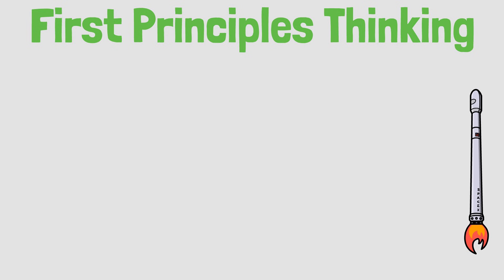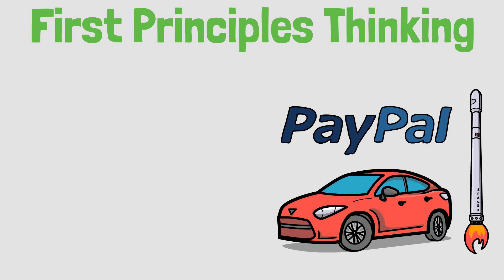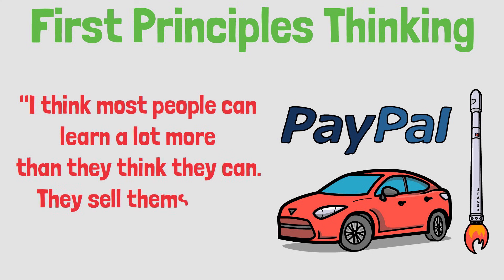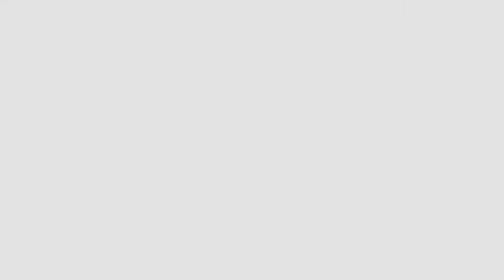Never underestimate yourself and what you can achieve. Elon Musk said, I think most people can learn a lot more than they think they can. They sell themselves short without trying. Believe in yourself and use first principles to solve problems. You can achieve whatever you want to achieve.